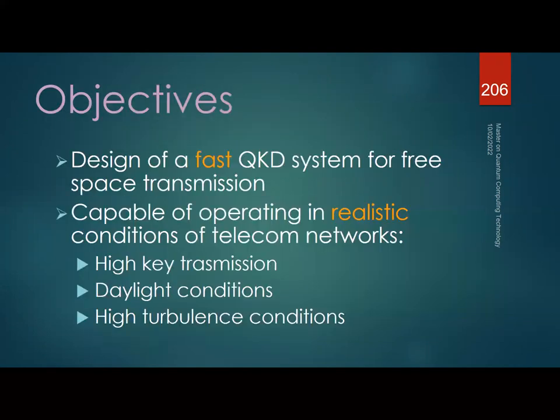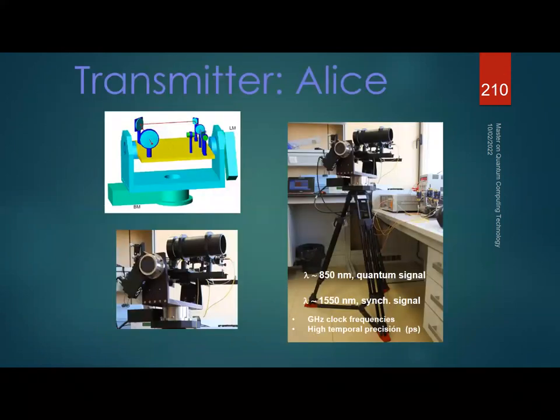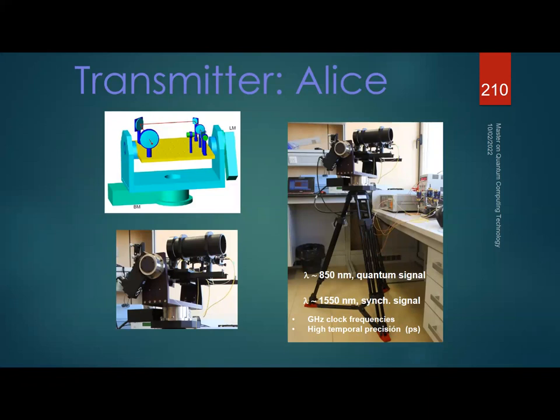Our objectives were to build a fast system capable of operating under realistic urban conditions — high speed, daily ambient conditions, and high turbulence scenarios typical of cities due to thermal effects. We designed our transmitter (Alice) using 850 nm for the quantum signal and 1550 nm for the synchronization signal, allowing Alice and Bob to share a clock. We used gigahertz clock frequencies and very high temporal precision for the lasers and electronics.